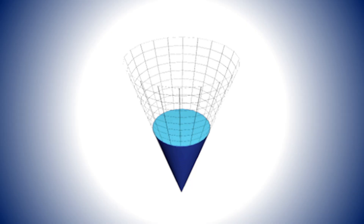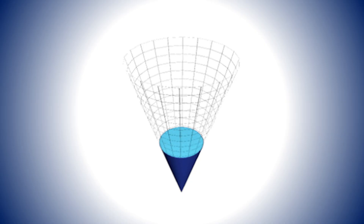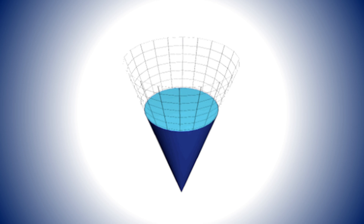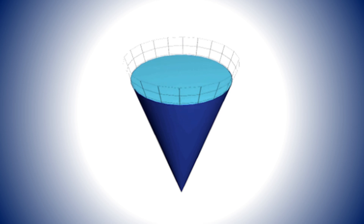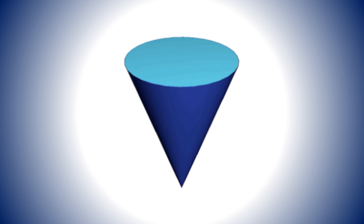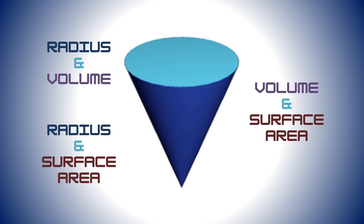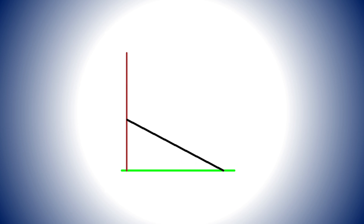Suppose there's a cone that's expanding in size, or a ladder that's sliding down a wall. In both scenarios, something's happening that's causing changes in either measurements or dimensions specific to each scenario. For example, as the cone is getting bigger, the radius of the circular base is increasing as well, along with the volume of the cone and the surface area. Not only are they all getting bigger, but they're related to each other as well. We can relate the changes of the radius with the changes in the volume, or the changes in the surface area, or we can relate the changes in the volume with the surface area.